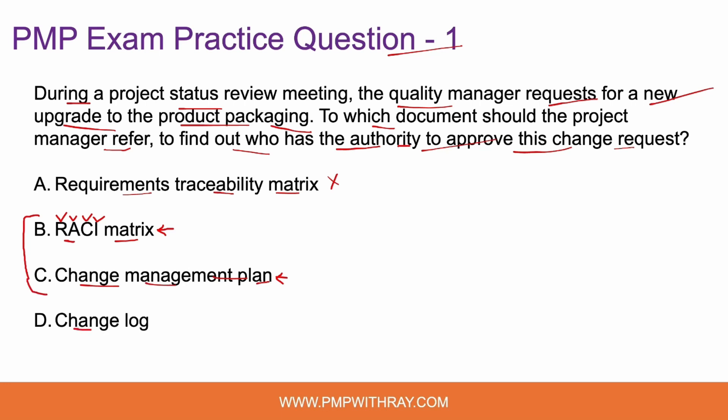Option D: change log. That is incorrect. In the change log, you keep track of a change request from the time it has been proposed until a decision is reached — whether it's accepted, rejected, or put on hold. The change log is a ready reckoner where you can access information about the status of a change request. But it definitely does not give you information about who has the authority to approve a change request. So option D is incorrect.